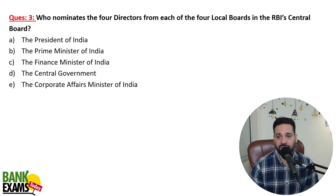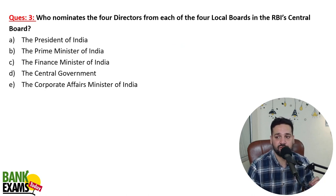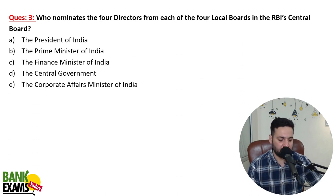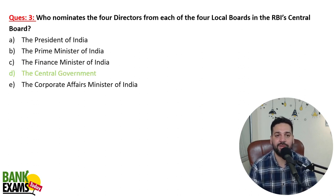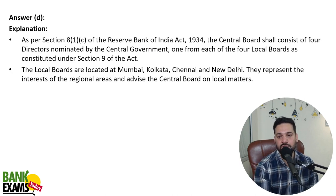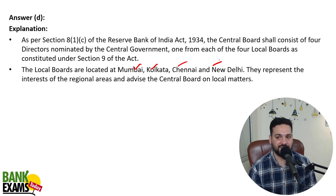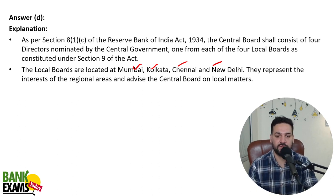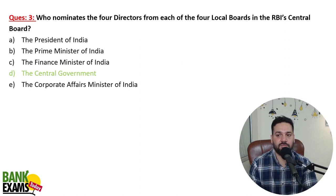Who nominates the four directors from each of the four local boards in the RBI Central Board? The Central Government nominates four directors from four local boards located at Mumbai, Kolkata, Chennai, and New Delhi. The Central Government appoints these four directors from the four different local boards.